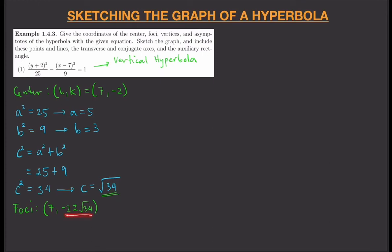For the vertices, we move 5 units (the value of a) up and down from the center, since the hyperbola is vertically oriented. So the vertices are at (7, -2 ± 5), which simplifies to (7, -7) and (7, 3).